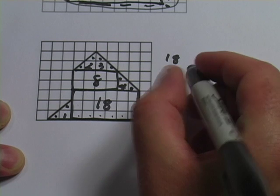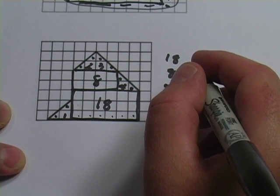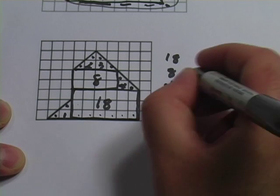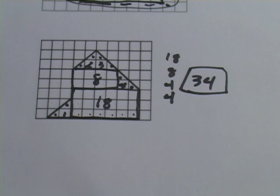So 4 and 4 is 8, and 8 is 16, and 18. What is that? 34. So I'm pretty sure a really strong estimate, if not the exact value for this, is 34 square units.